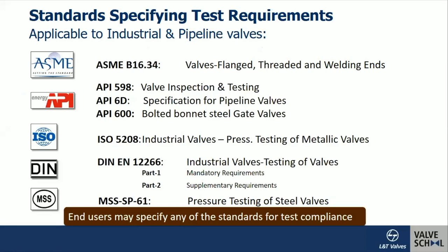Having said this, there are different testing standards as I was narrating at the start of my presentation. It starts from ASME B16.34, API 598, API 600. API 600 per se is a product standard which also talks about the testing process. API 600 is the product standard; in turn it refers to testing in API 598. There is an ISO standard and there is an EN standard. And you can see MSS SP61, which is basically for pressure testing of steel valves. Over a period of time, these standards were developed to handle different types of valves. That is why we see different testing standards apart from the product standards. You can also see applicable testing standards for control valves as well as pressure relief valves.